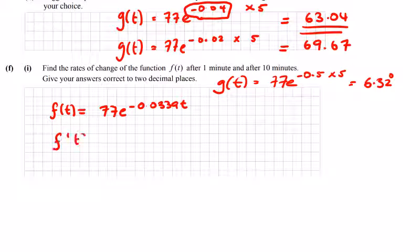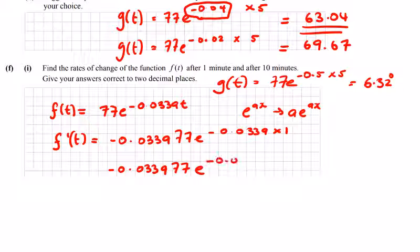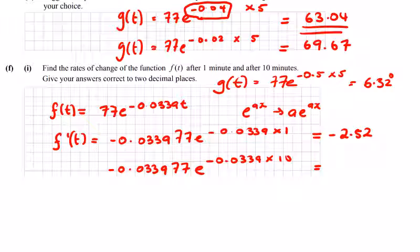To just differentiate F prime T, it's going to be equal to, distance E to the power of AX goes to AE to the power of AX. So just bring the minus 0.0339 in front. And that's multiplied by 77E to the power of minus 0.0339 by 1. And then just change your calculator. Go back and you can change the 1 to a 10. So the first one's giving me minus 2.52, and the second one is giving me minus 1.859, minus 1.86.